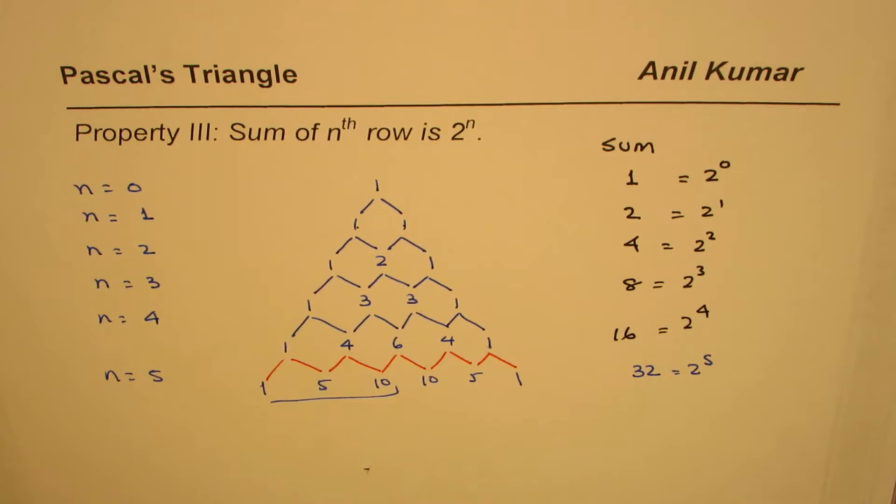So likewise, what we understand here is that, in general, the nth row, sum of all the numbers on the nth row is 2 to the power of n.